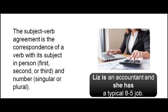Subject-verb agreement is the correspondence of a verb with its subject in person — first, second, or third — and number, singular or plural. For example: 'Liz is an accountant and she has a typical eight to five job.' The verb 'is' corresponds with the subject 'Liz,' which is third person singular, and the verb 'has' corresponds with the pronoun 'she,' which is also third person singular.